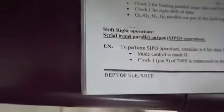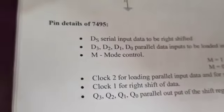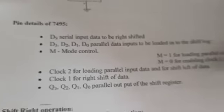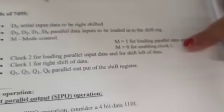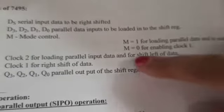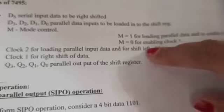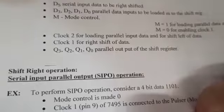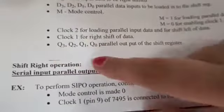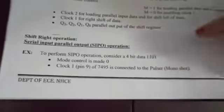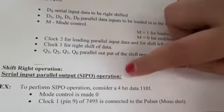DS is the serial input data. D3, D2, D1, D0 are the parallel data inputs. M is the mode control — M is 1 for loading parallel data, M must be kept high when loading parallel data and low when entering serial data. Clock 2 is meant for parallel input data, clock 1 is meant for serial input data. Q3, Q2, Q1, Q0 are the parallel outputs of the shift register.